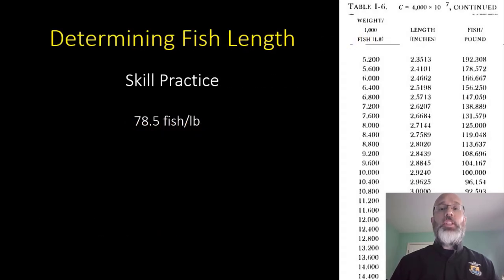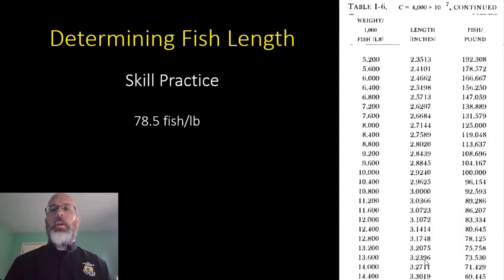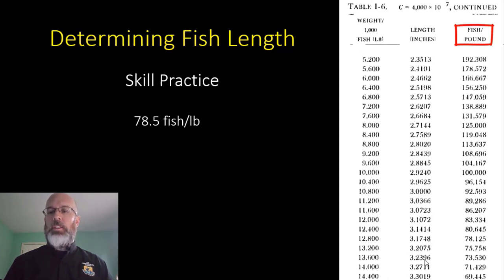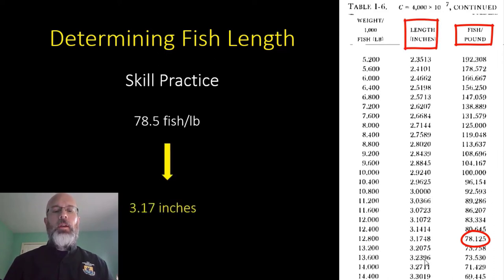The next step is to use the table to convert 78.5 fish per pound to inches. You go to the far right column under fish per pound, work your way down until you find something close to 78.5, and then work your way over to inches. These fish are 3.17 inches in length.